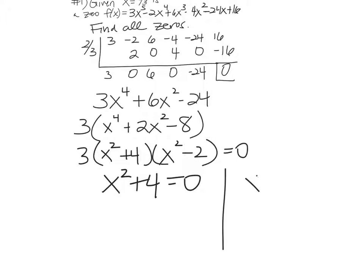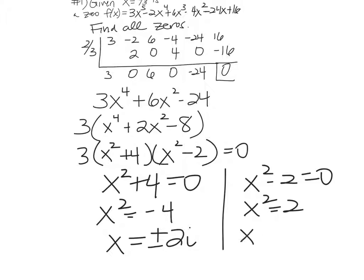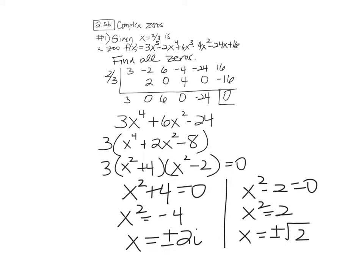So x^2 + 4 = 0, or x^2 - 2 = 0. Subtract 4. x^2 is negative 4. Take the plus and minus square root, and x would equal plus or minus 2i. Over here, add 2. Take the plus or minus square root, and you get rad 2.